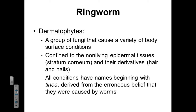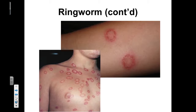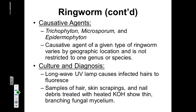It's been found that all these conditions have names that begin with 'tinea,' from the erroneous belief that these conditions were caused by worms. It's now known that these are caused by fungi, but initially it did look like there was a worm underneath the skin. Trichophyton, Microsporum, and Epidermophyton are all known causative agents of ringworm. Depending on which causative agent is at play, a different kind of ringworm will manifest, and the causative agent is also going to vary from geographic region to geographic region. Ringworm is not going to be restricted to one genus or one species.